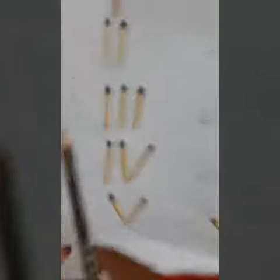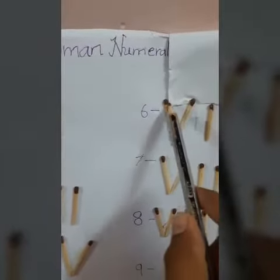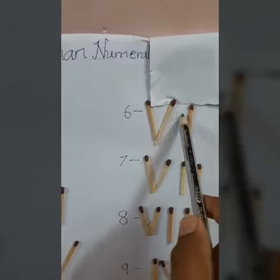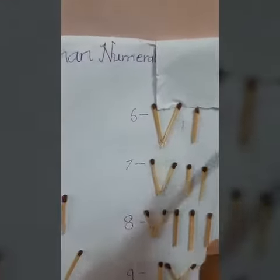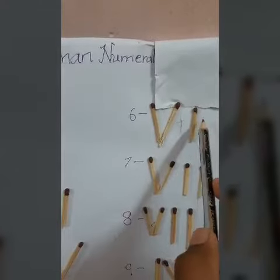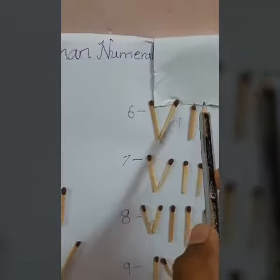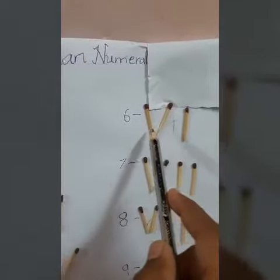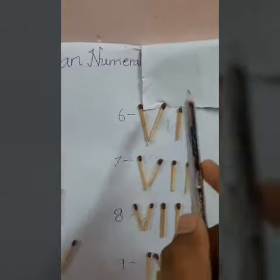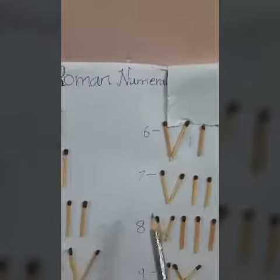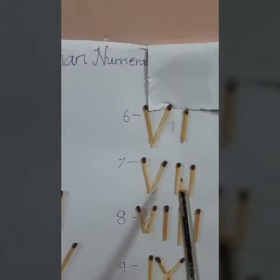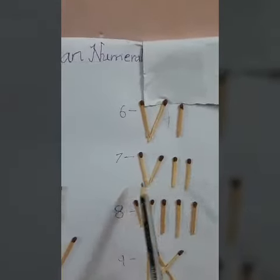For 5, V stands for 5. For 6, we have to add V that is 5 plus I, I means 1, so 5 plus 1 equals to 6. For 7, 5 plus 1 plus 1 equals to 7.